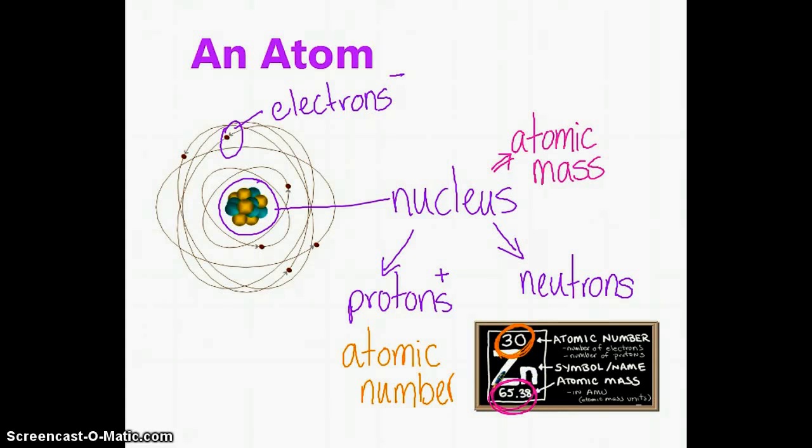Its atomic mass is 65.38. Let's just look at the whole numbers. 65. 65 minus 30 is 35. That means it has approximately 35 neutrons.